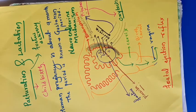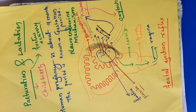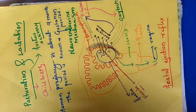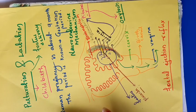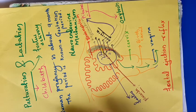Soon after the infant is delivered, the placenta is also expelled out from the uterus. This is very simple — just understand it. Let me draw another diagram so you can easily get that.